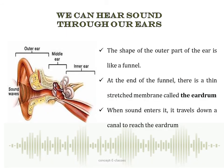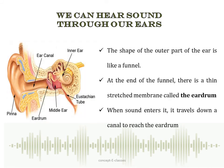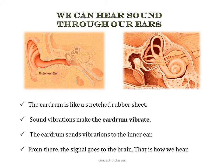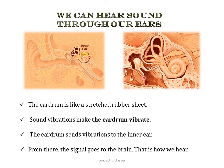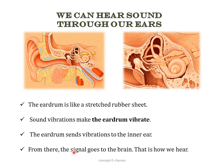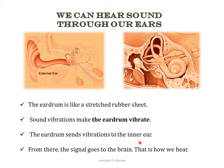The last topic of this video is how we can hear sound. We hear sound through our ears. The ear consists of three parts: the outer ear, the middle ear and the inner ear. The shape of the outer part of the ear is like a funnel, and at the end of the funnel there is a thin membrane called the eardrum. When sound enters it travels down through the canal to reach the eardrum, which is like a stretched rubber sheet. Sound vibrations make the eardrum vibrate, and the eardrum sends the vibrations to the inner ear. From the inner ear, the signal goes to the brain and thus we are able to hear.